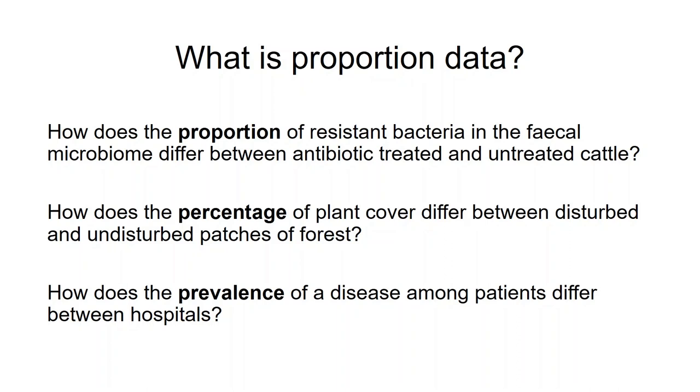percentages, or prevalences. They're limited to 0 to 1 or 0 to 100 percent. And some of the research questions you might have relating to proportion data are demonstrated here. So my one was, how does the proportion of resistant bacteria in the fecal microbiome differ between antibiotic-treated and untreated cattle?